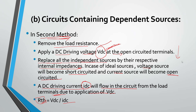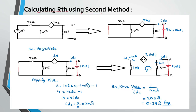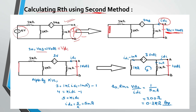We will again take that same example and calculate RTH using this second method. The load terminal was already open. We apply a DC battery voltage at the load terminals, then replace all independent sources by their internal impedances — so we short the voltage source. We apply VDC supplying IDC current. For convenience, we assume VDC equals 1V, so VAB equals 1V, and therefore 3VAB becomes 3V.